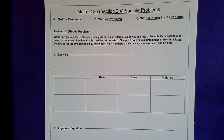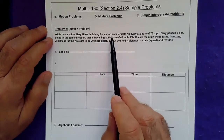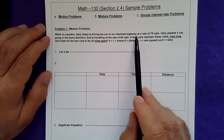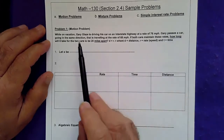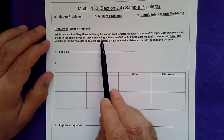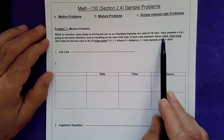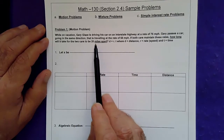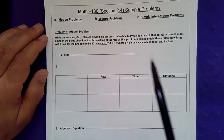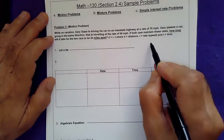Section 2.4, more application problems, part 2. Let's do a motion problem. While on vacation, Gary is driving his car on an interstate highway at the rate of 76 miles per hour. Gary passes a car going in the same direction that's traveling at 68 miles per hour. If both cars maintain these rates, how long would it take for the two cars to be 20 miles apart?